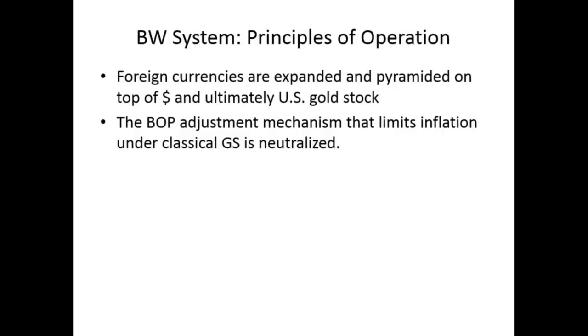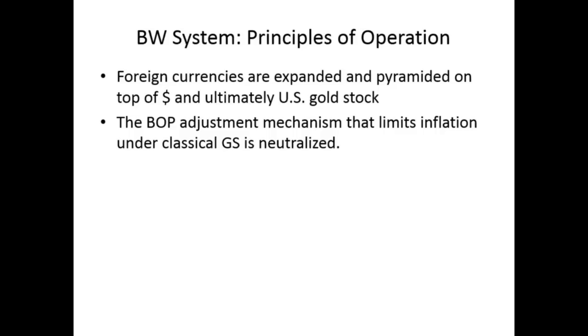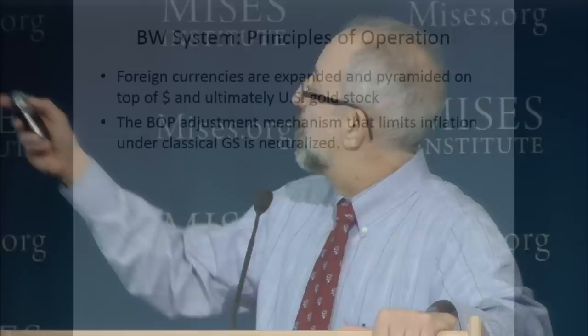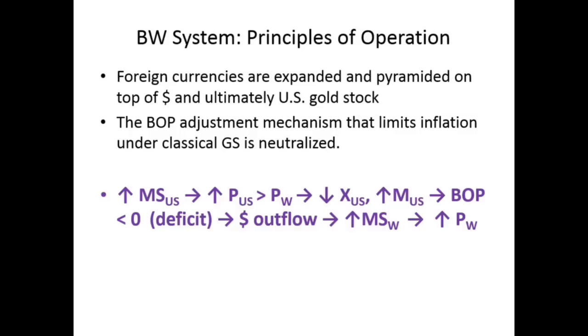If the dollar is treated as good as gold, then if the U.S. government has deficits, foreign countries will never send the dollars back for gold — and they did believe that for a while, but after a while they lost confidence. Under the Bretton Woods principles of operation, foreign currencies were expanded and pyramided on top of dollars and ultimately the U.S. gold stock. If the U.S. had balance of payments deficits, foreign exporters took dollars to their central banks demanding their own currencies — and the central banks created those currencies out of thin air. So U.S. inflation was exported to foreign countries — we gave them paper dollars, they gave us real goods.